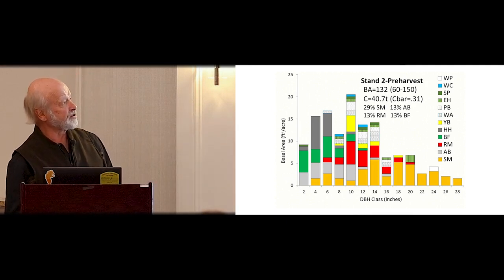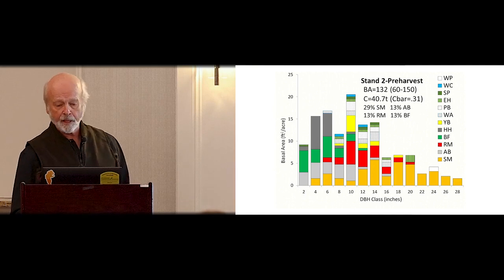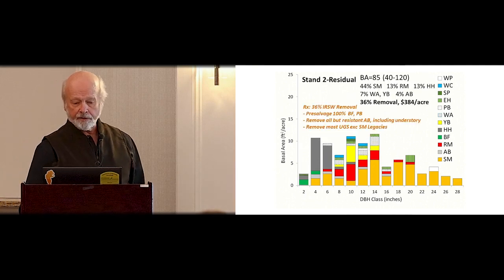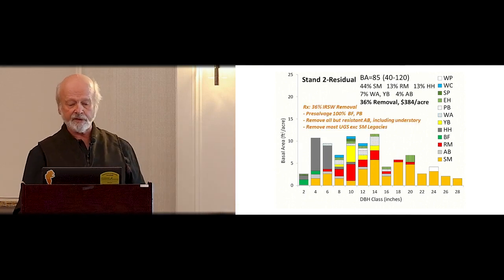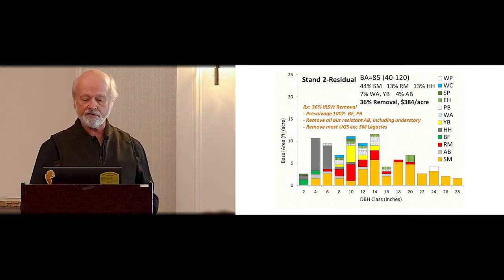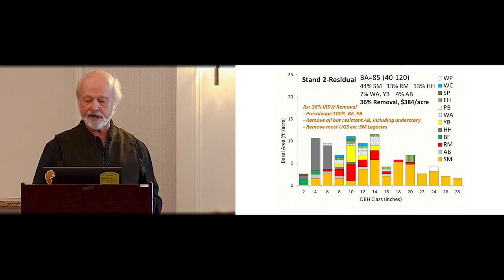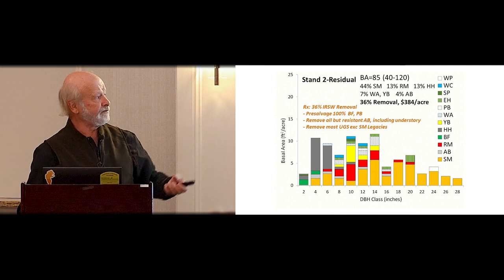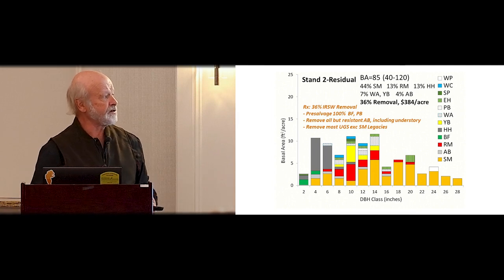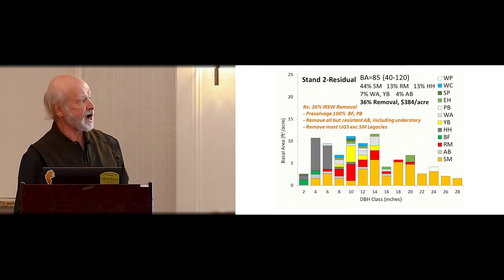With only 36% removal, we're now down to 40 square feet residual basal area. We've increased the sugar maple stocking. There's some nice yellow birch and ash in this stand. We made much lower money — $384 per acre — but that's still a decent income and certainly operable. There are 12 species here; this is a very diverse stand and the woodlot in general is that way.